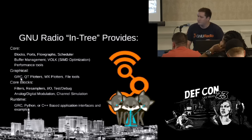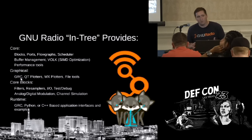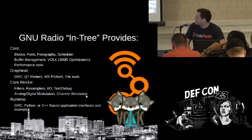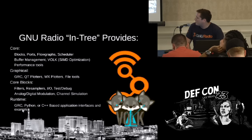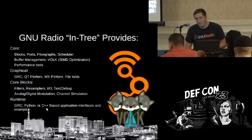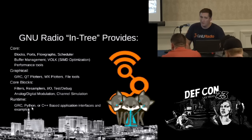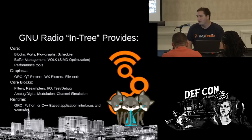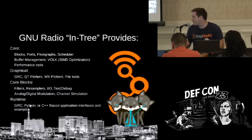On the graphical side, you've got GRC — the GNU Radio Companion — which helps you rapidly build and prototype waveforms. You've got Qt plotters and WX plotters, file tools, and core blocks including filters, resamplers, IO blocks, test and debug blocks, basic modulation tools, channel simulation tools, and forward error correction tools. The runtime has essentially two ways to use it: running from Python, or importing GNU Radio blocks from C++ applications. When you use Python, all the actual low-level signal processing is in C and SWIG-wrapped, so you're not really hurting your performance in most cases.